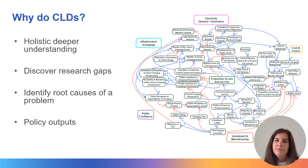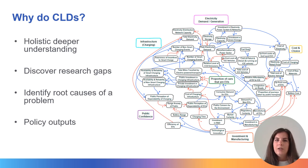Causal loop diagrams are also useful for identifying the root cause of a problem. This can be identified by identifying negative balancing loops, negative reinforcing loops, trade offs and potential unintended consequences. Causal loop diagrams can also support policy changes and support theory of changes.